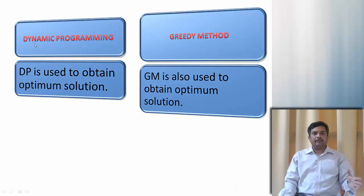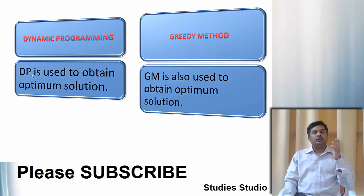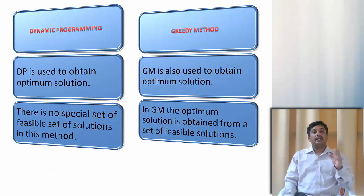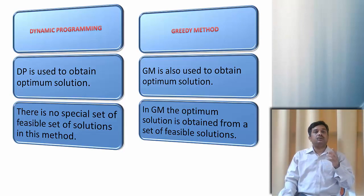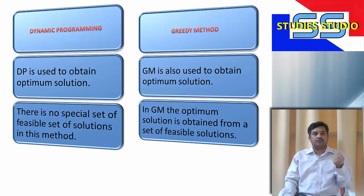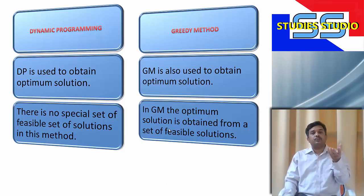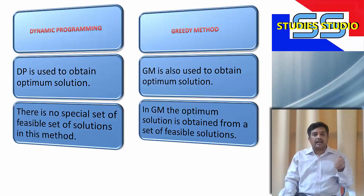In both dynamic programming and greedy method, we use these methods to find the optimum solution for a problem. In dynamic programming, there is no such concept of feasible solution, so we don't get a special set of feasible solutions from where we get our solution. But under greedy method, we first find the feasible solution and then out of the feasible solutions, we get our optimal solution.